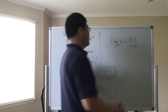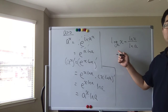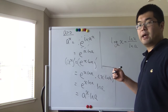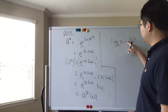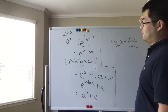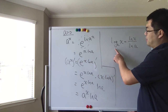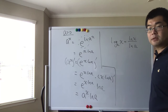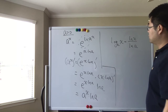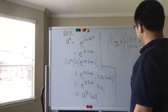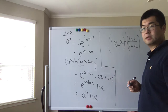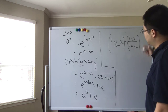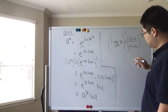Similarly, to find the derivative of log base a of x, we use the change-of-base property to rewrite it as ln(x) over ln(a), giving both terms the same base — the natural number e. Taking the derivative of this, the derivative of ln(x) equals one over x.